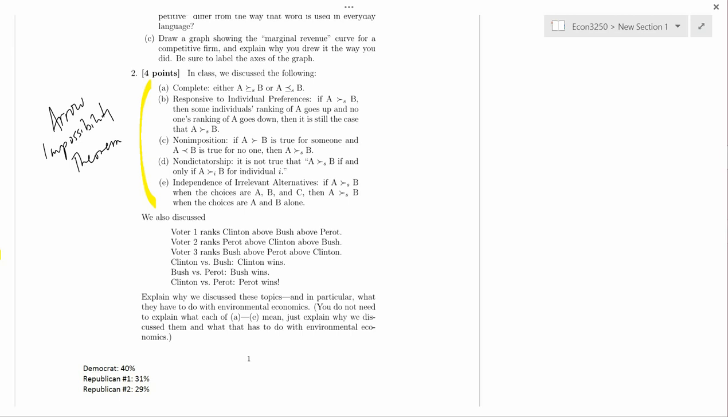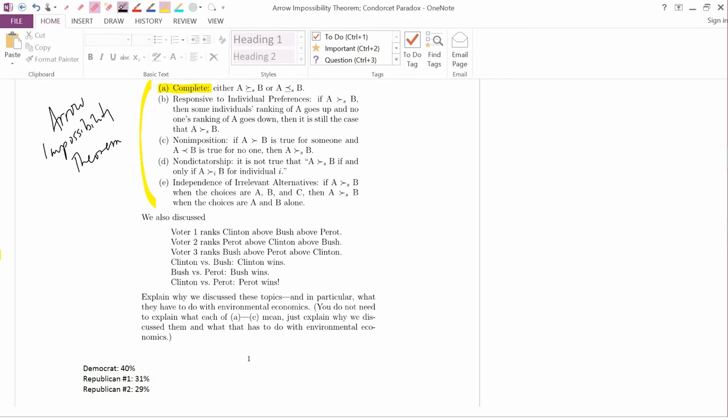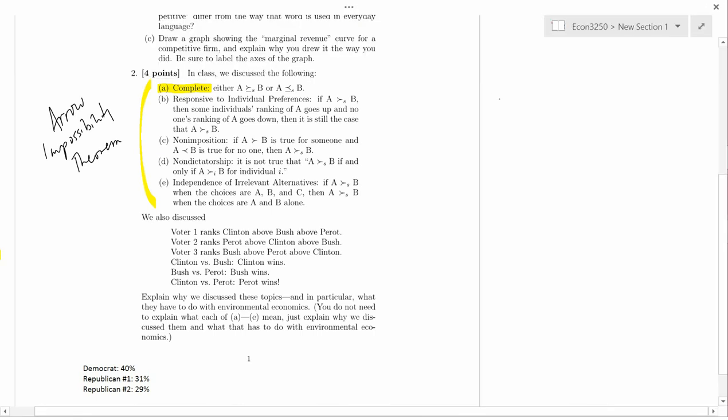He came up with these five criteria, A, B, C, D, E, as the sort of minimal criteria that you would want a social decision rule to have. The first characteristic that we would want a social decision rule to have is it should be complete, which means that society ought to be able to either say that society prefers A to B, or say that society prefers B to A, or say that society is indifferent between them. I'm using a mathematical symbol here.